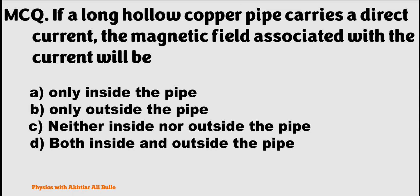If a long hollow copper pipe carries a direct current, the magnetic field associated with the current will be: a) only inside the pipe, b) only outside the pipe, c) neither inside nor outside the pipe, d) both inside and outside the pipe.